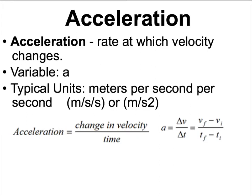Let's start with the definition, formula, and units for acceleration. Acceleration is the rate at which velocity changes. Velocity was the rate at which displacement changes, and speed was the rate at which distance changes, so acceleration is definitely related to velocity and speed. The abbreviation for acceleration is just a little 'a', and the units are going to be meters per second per second, or meters per second squared.